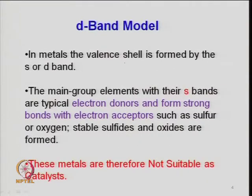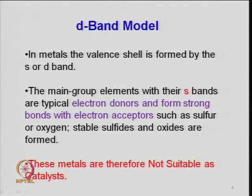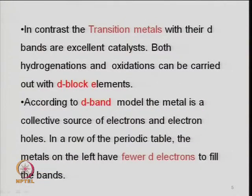Main group elements with their s-bands are typical electron donors — they can easily donate electrons and form strong bonds with electron acceptors such as sulfur and oxygen. So they oxidize or sulfide faster and form stable molecules that cannot provide catalytic activity. Transition metals, on the other hand, have very good catalytic properties; hydrogenation and oxidation reactions can be carried out with these d-block elements.